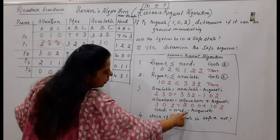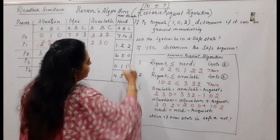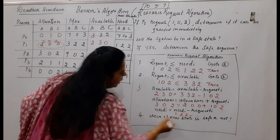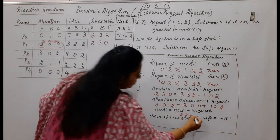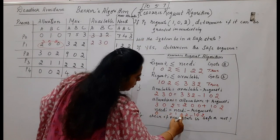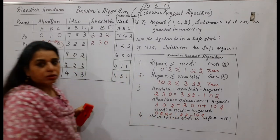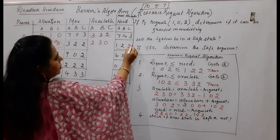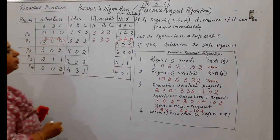Next, update the need value: Need(i) = Need(i) − Request(i). P1's need was 1,2,2 and the request is 1,0,2, so: 1−1=0, 2−0=2, 2−2=0. The need for P1 is updated to 0,2,0. Now the allocation, available, and need values for P1 are all updated.